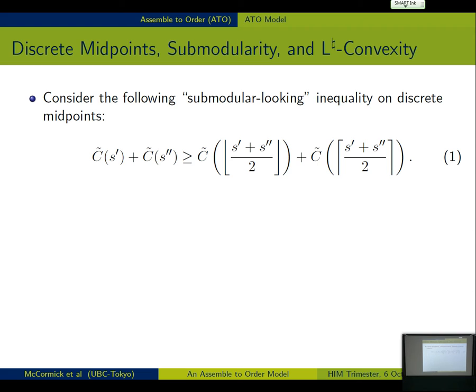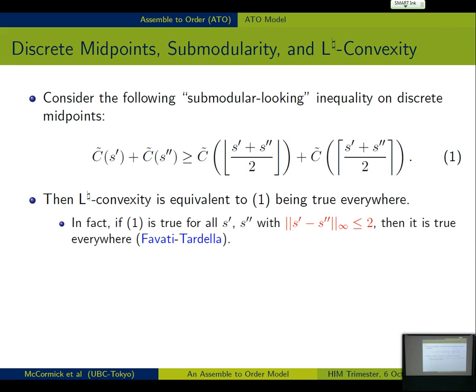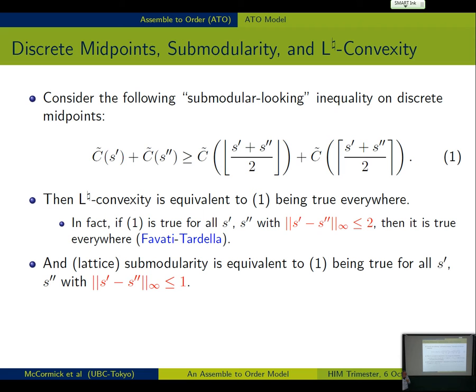So here we have the thing that defines L natural convexity. So, this inequality, we need to be true everywhere for L natural convexity. In fact, it can be shown, it was shown all going way back to Favati Tardella, that if it's true at max distance at most two everywhere, then it's true, in fact, everywhere. All you need to do is verify it for things at distance at most two. And it's also, it is relatively easy to see, that lattice submodularity is equivalent to the inequality being true for everything at distance at most one. So, for me, this is kind of really neat way of seeing the difference between submodularity on the lattice versus L natural convexity on the lattice. Submodularity, stuff at distance one satisfies that. L natural convexity also requires stuff at distance two. And once you know it for distance two, you know it everywhere.